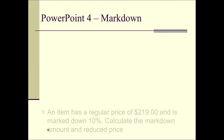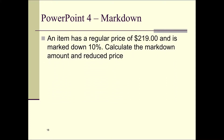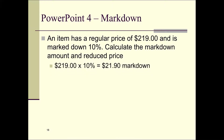Let's do one more. An item has a regular price of $219, marked down 10%. We want to calculate the markdown and then the reduced price. The markdown is $219 times 10%, so we're going to mark it down $21.90.